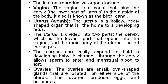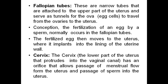Ovaries: the ovaries are small oval-shaped glands located on either side of the uterus. The ovaries produce eggs and hormones. Fallopian tubes: these are narrow tubes that attach to the upper part of the uterus and serve as a tunnel for travel from the ovaries to the uterus. Conception: the fertilization of an egg by the sperm normally occurs in the fallopian tube. The fertilized egg then moves to the uterus where it is implanted into the lining of the uterine wall.